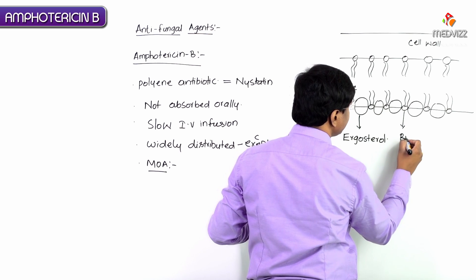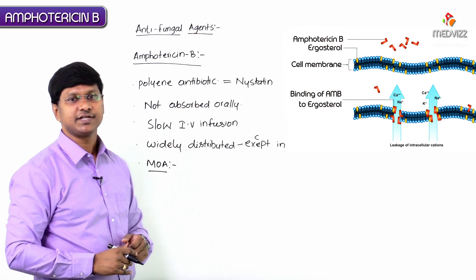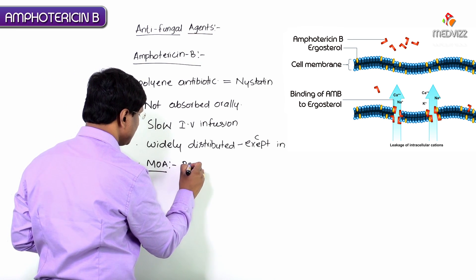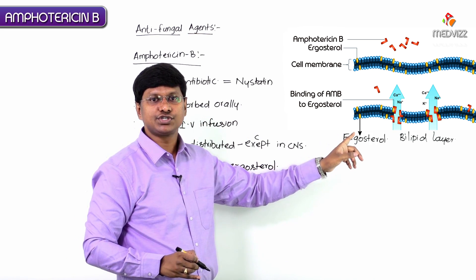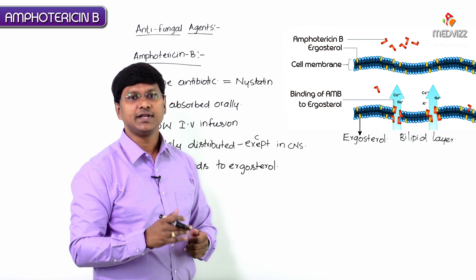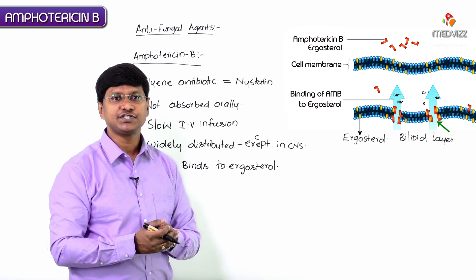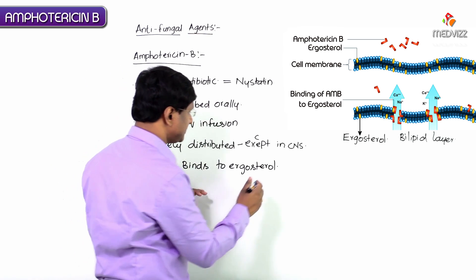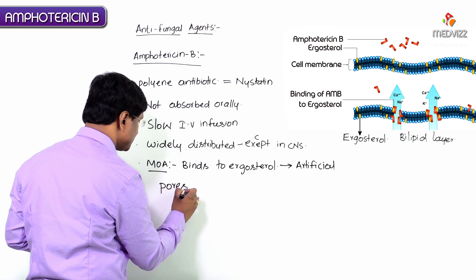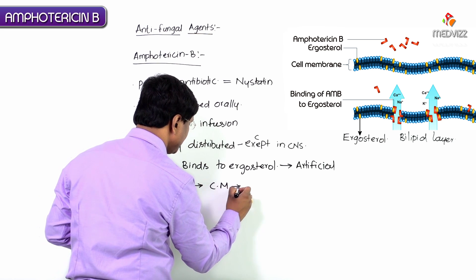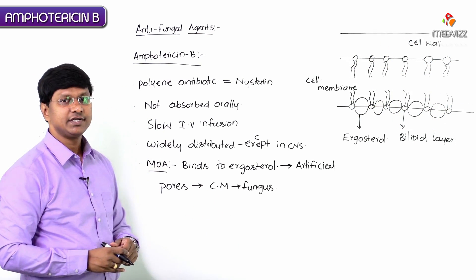The cell membrane of the fungal organism has a bilipid layer. Amphotericin B binds to ergosterol present within the cell membrane and alters membrane permeability. By binding to ergosterol, it causes the formation of artificial pores within the fungal cell membrane.